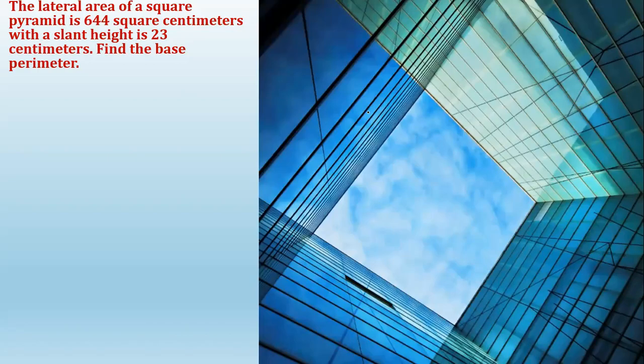The lateral area of a square pyramid is 644 square centimeters, with a slant height of 23 centimeters. Find the base area.